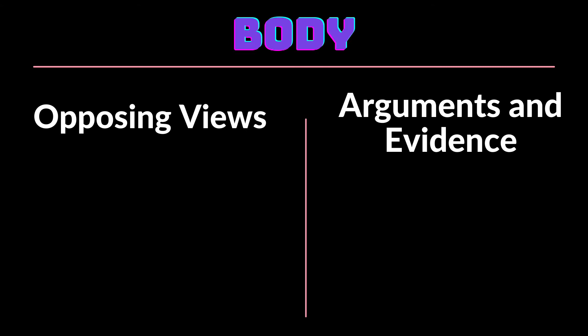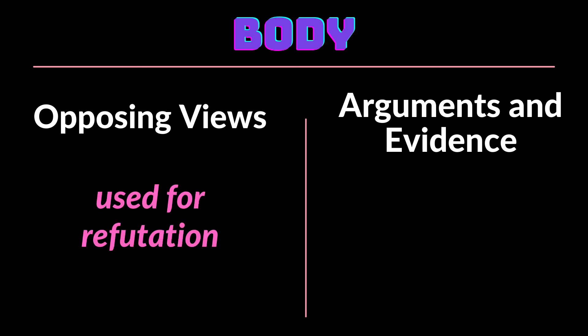The body also includes two necessary parts. The first one is the paragraph that gives the opposing views, and the second one gives the arguments and the evidence. It is important that the writer strongly establishes the opposing views — not to give it an easy win, but because there's nothing to gain in refuting a weak position. If that's the case, then the topic is not worthy to be discussed as an editorial topic. The next part expresses the arguments and evidence, and must start with a transition from the opposing views to the stand the writer supports.